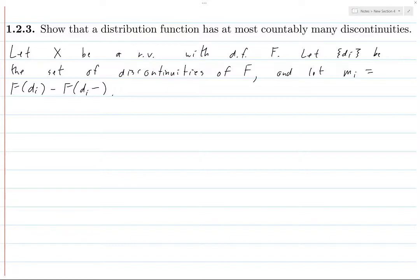Because what F(di) minus F(di-) tells us is how much of a jump there is in the distribution function at the point di. So di is a discontinuity of F, and mi tells us how big of a leap that discontinuity is.